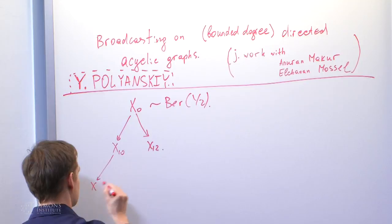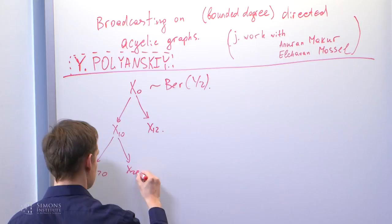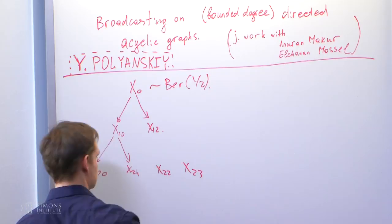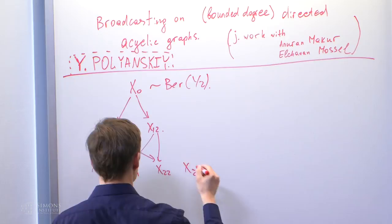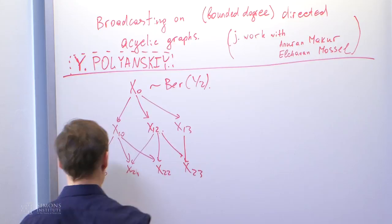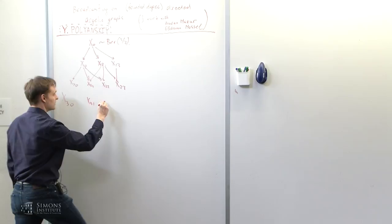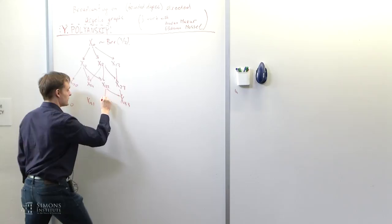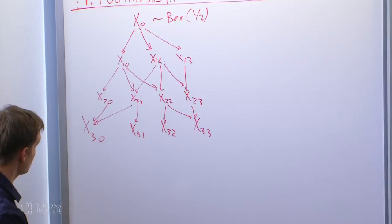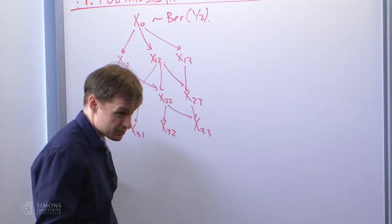The first layer consists of two random variables, the second layer maybe consists of three. This is x21, x22, and let's say four. We'll get some kind of functions here.